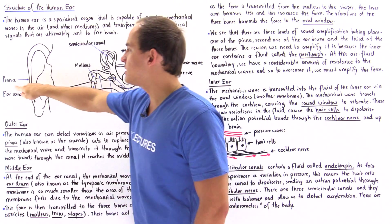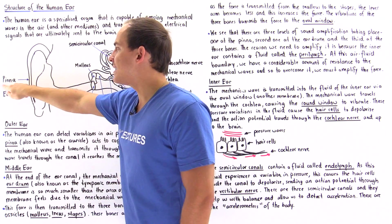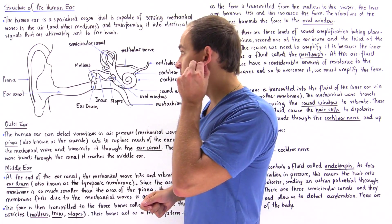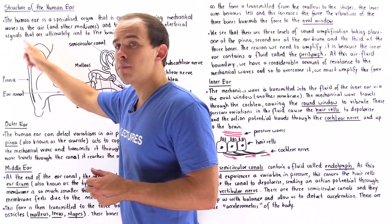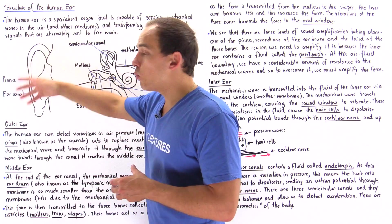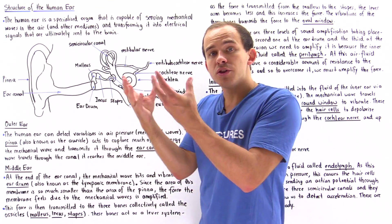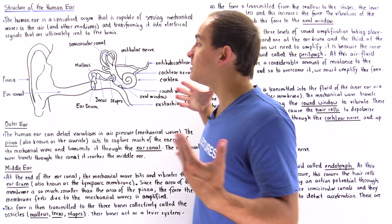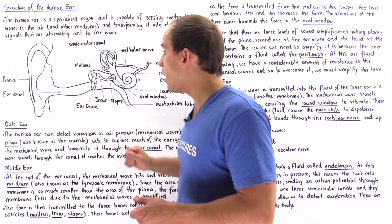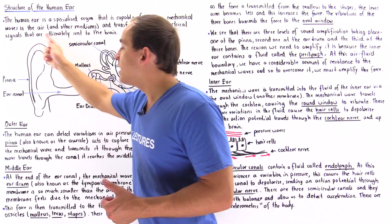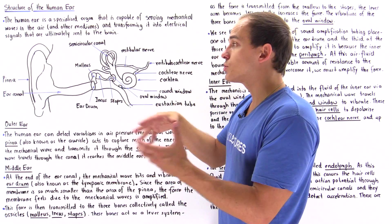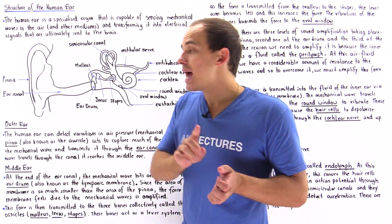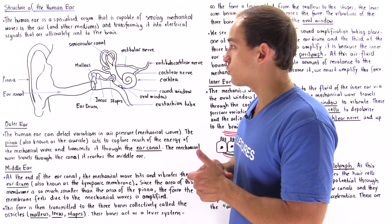The outer ear basically contains a section known as the pinna, or the auricle. This entire section, including our ear lobe, is known as our pinna. What the pinna does is it captures all the energy carried by our mechanical wave and directs that mechanical wave into the ear canal. Because the pinna has such a large surface area, it basically acts to amplify the force that our pressure wave creates.